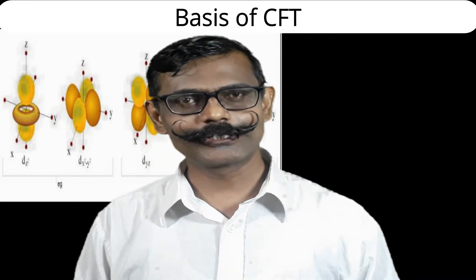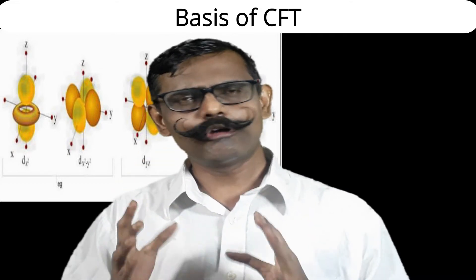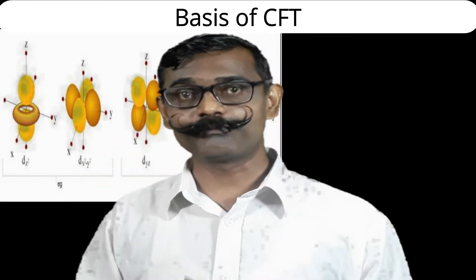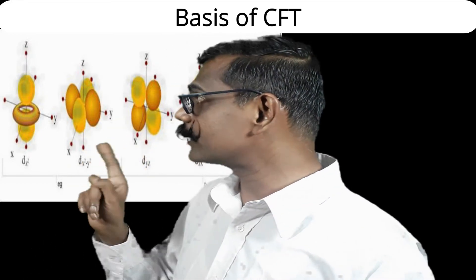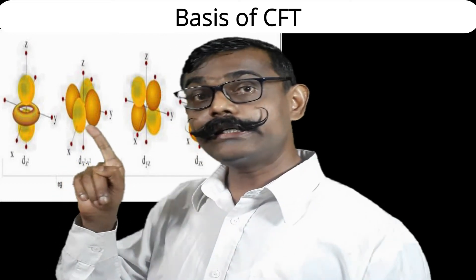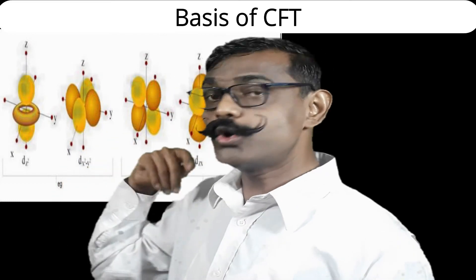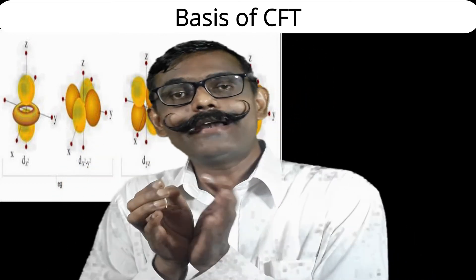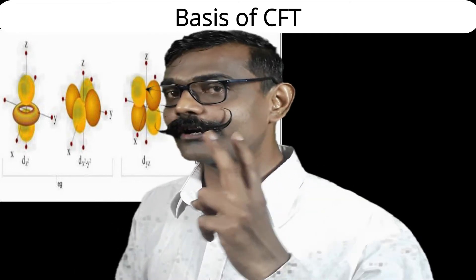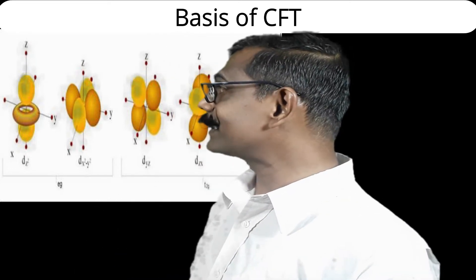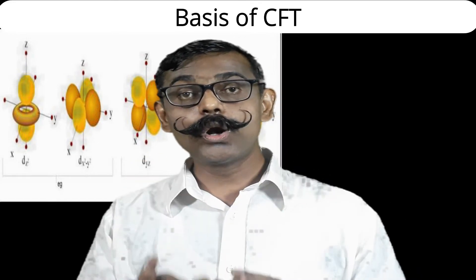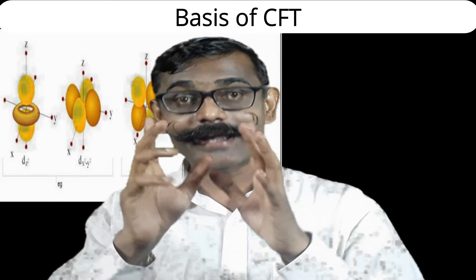By yellow color the positive wave function is represented and by brown color the negative wave function. Wave function is not important at this moment, but orientation and shape are important. The dz² orbital is oriented more towards z axis and partly towards x and y.